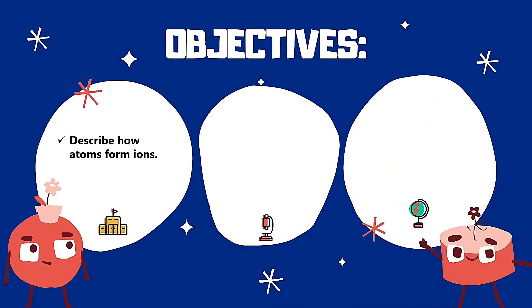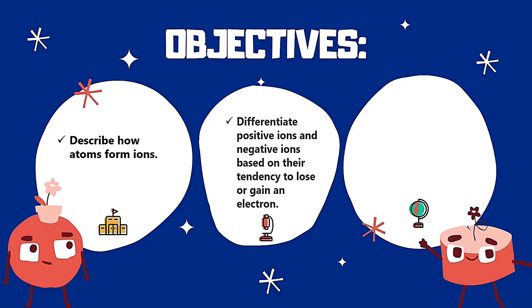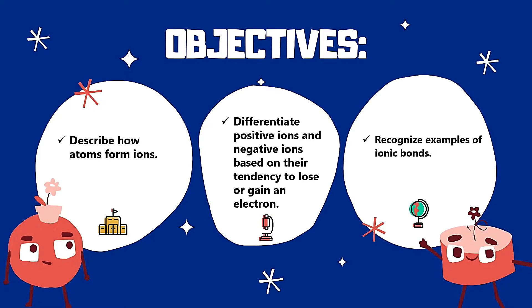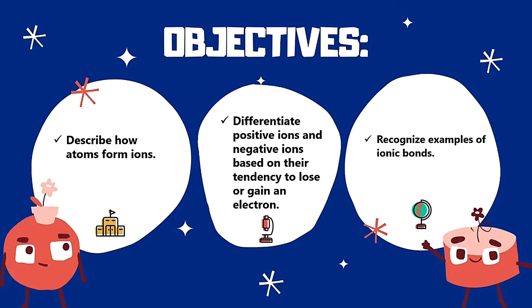Describe how atoms form ions; differentiate positive ions and negative ions based on their tendency to lose or gain an electron; and lastly, recognize examples of ionic bonds.